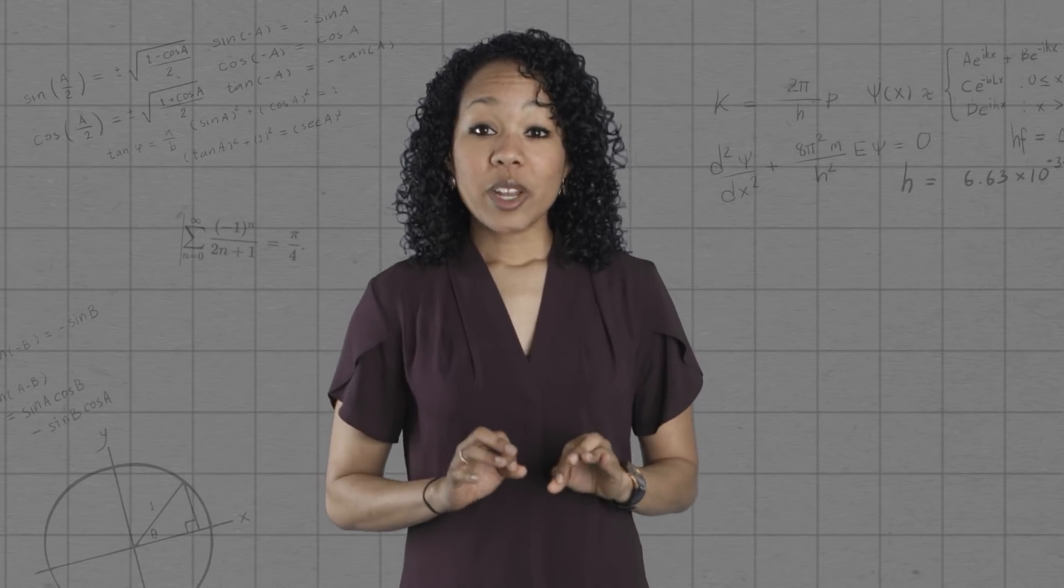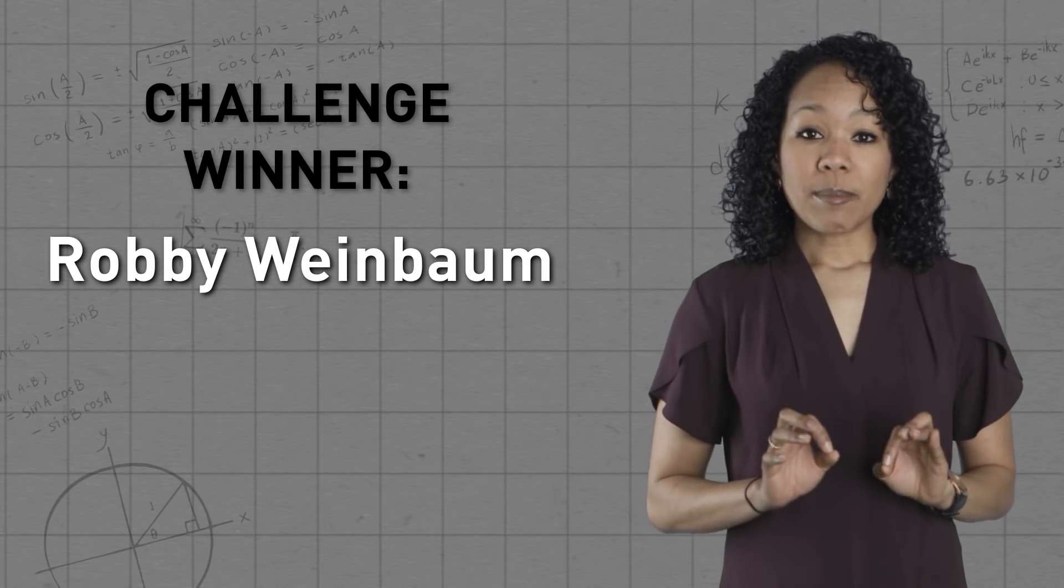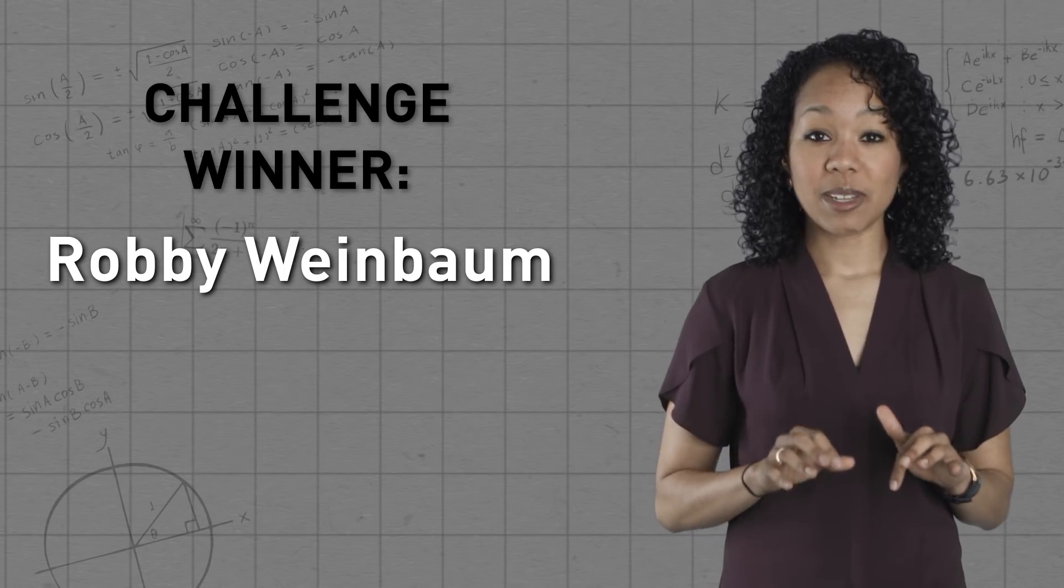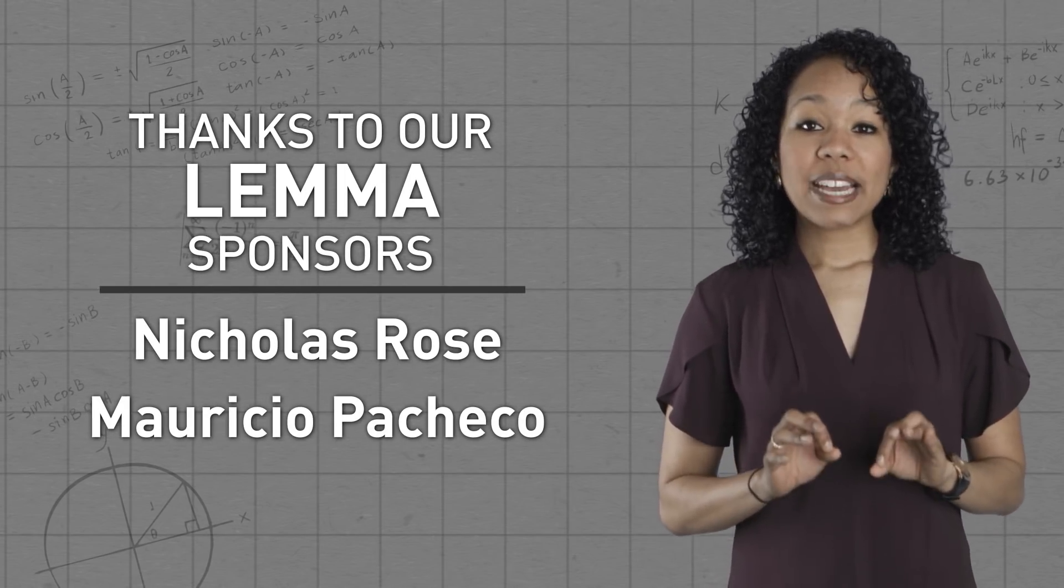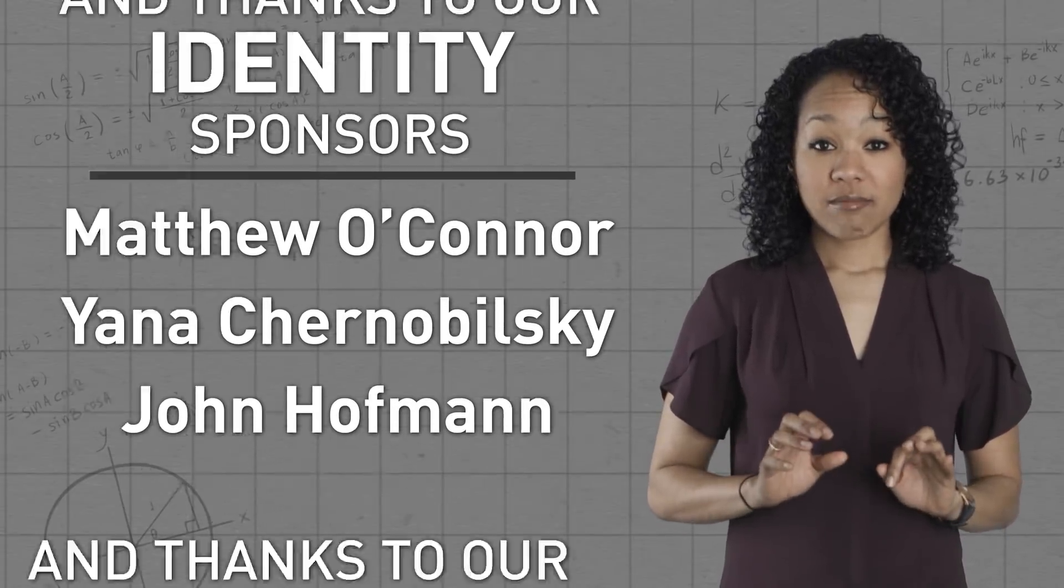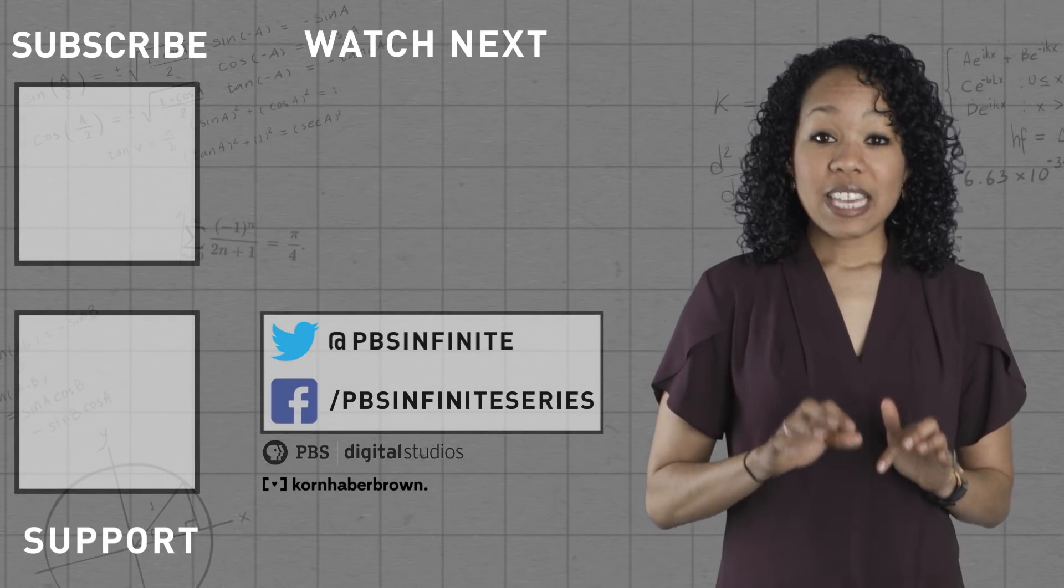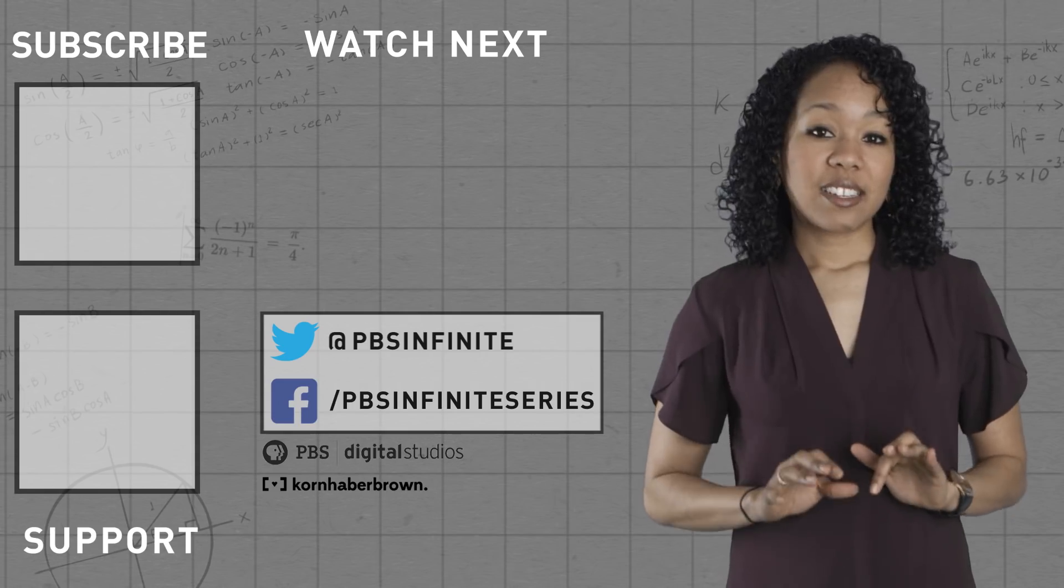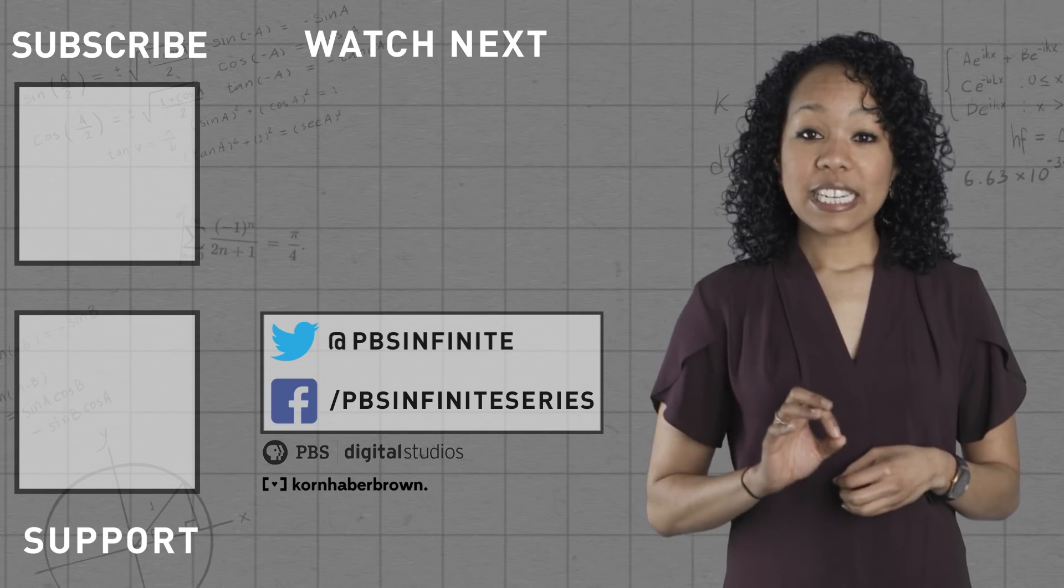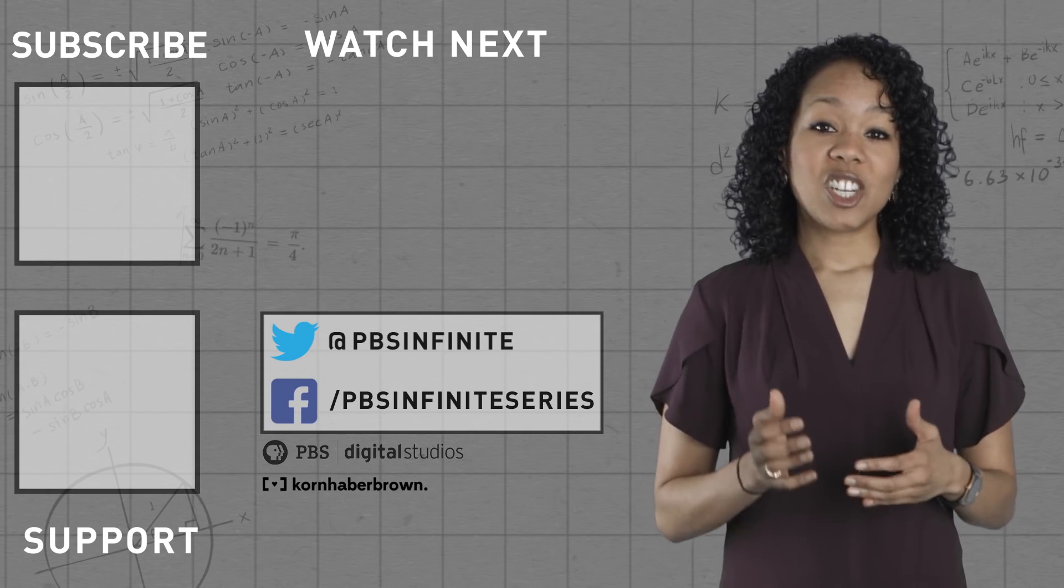I want to announce that the winner of our challenge problem for topology versus a topology is Robbie Weinbaum, who correctly showed that the picture found on Mathema is not a topology on the set with three elements, A, B, C. Robbie identified the proposed topology, the five subsets of X, including the empty set. But since the union of two of them, namely A union B, is not one of the given subsets, the second axiom of a topology is not satisfied. Well done, Robbie. Send us an email at pbsinfiniteseries at gmail.com. Let us know your t-shirt size and mailing address, and we'll get that t-shirt to you.